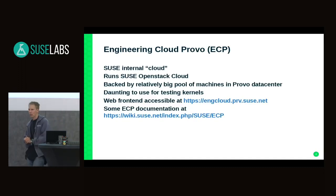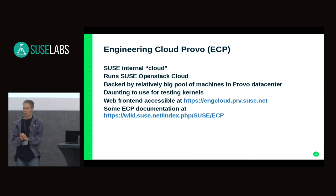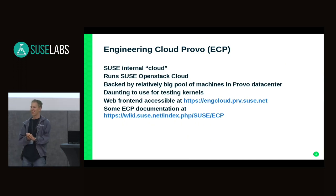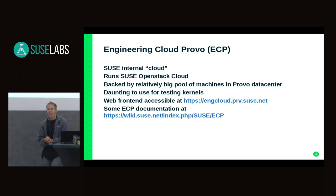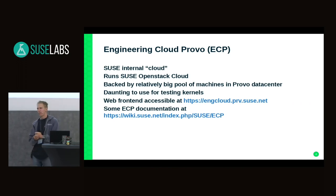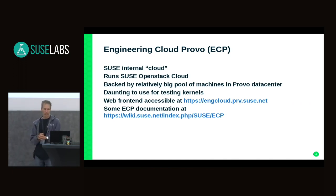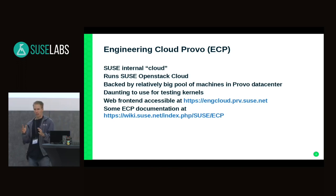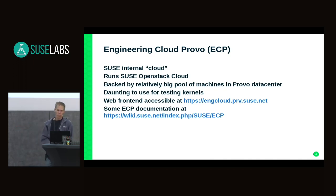So, engineering cloud in Provo — I'm not sure how many people know this, let's make a short query. Who knows what is engineering cloud Provo? Okay, not much. Engineering cloud in Provo is a pool of machines we have inherited from HP originally. It belongs fully to SUSE now. It's a SUSE internal cloud backed by around 100 servers, maybe a bit more — it's a decent pool of machines.